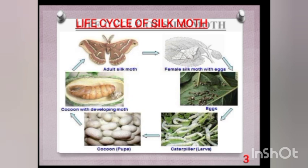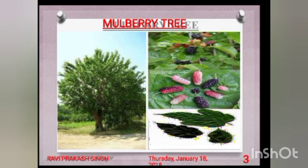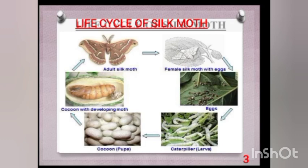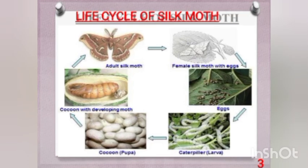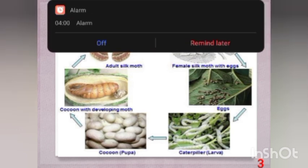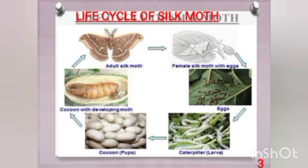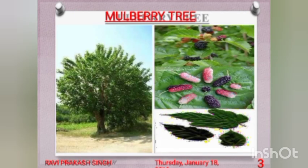As seen in the life cycle picture: the female silk moth gives eggs, which hatch into the caterpillar form. The caterpillar starts secreting fibers from its mouth and wraps those fibers around itself, forming a cocoon — which is mainly whitish or yellowish in color. From the cocoon, the silk moth is ultimately produced. The silkworm mainly feeds on the mulberry tree.